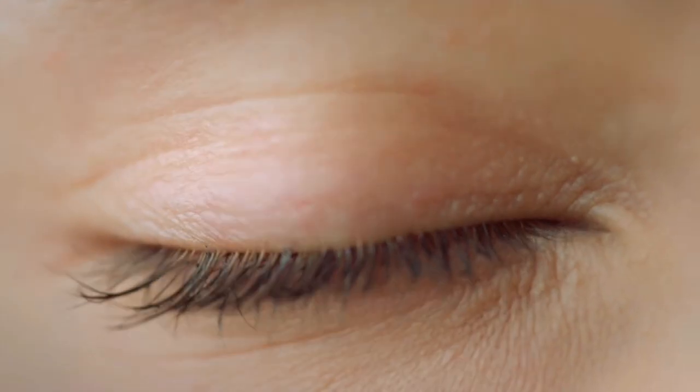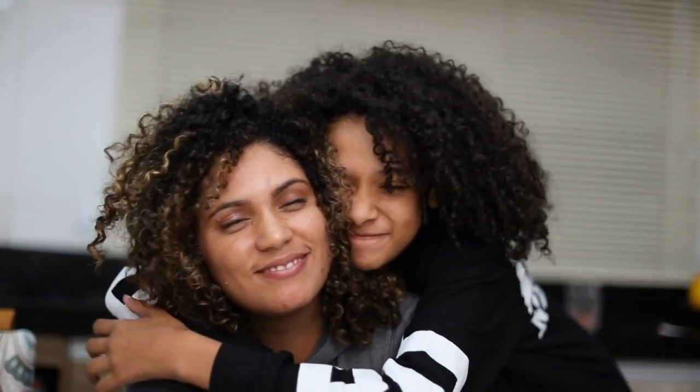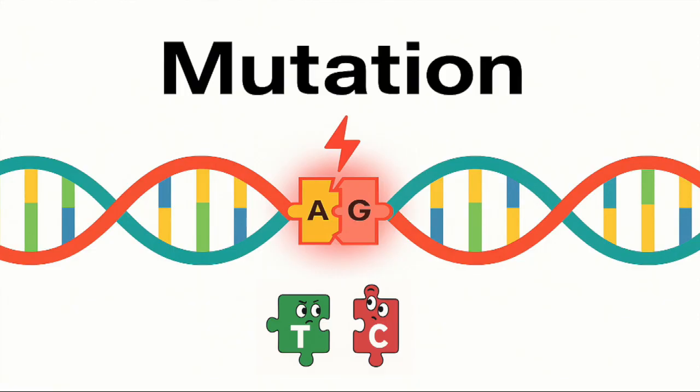Traits pass down like the color of your eyes or the curl in your hair, yeah it's all in the design. Mutations can happen when the letters misalign, some stay silent.